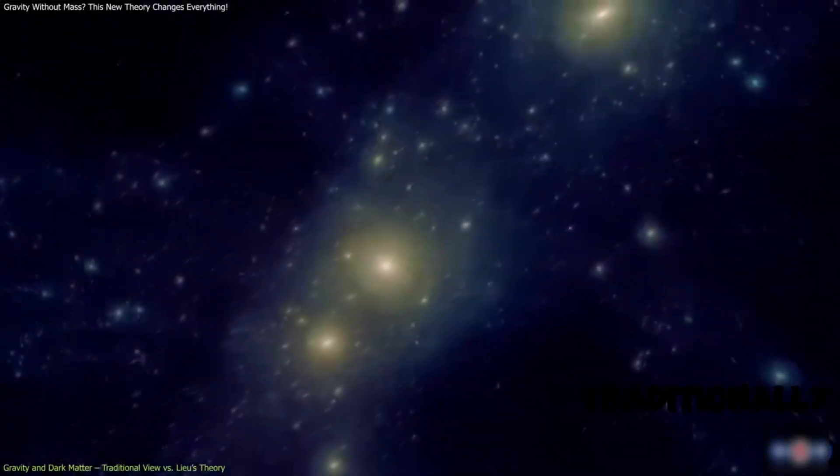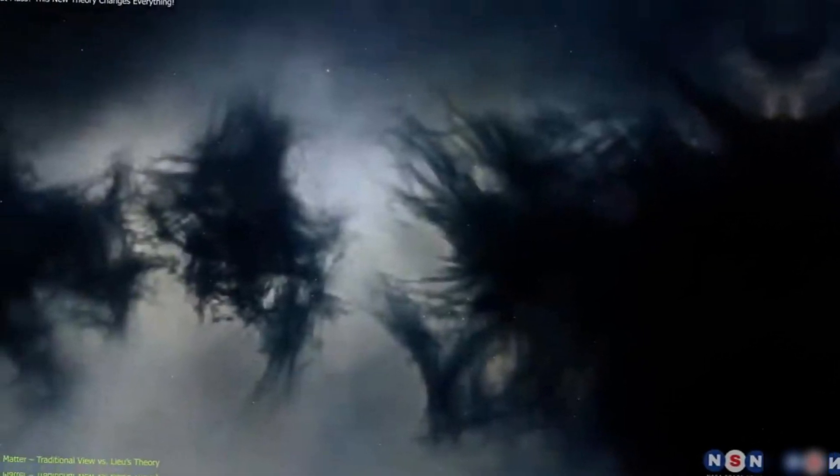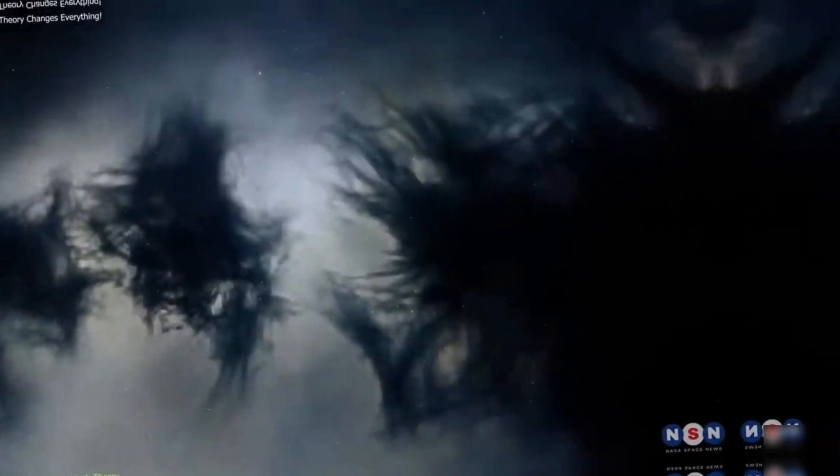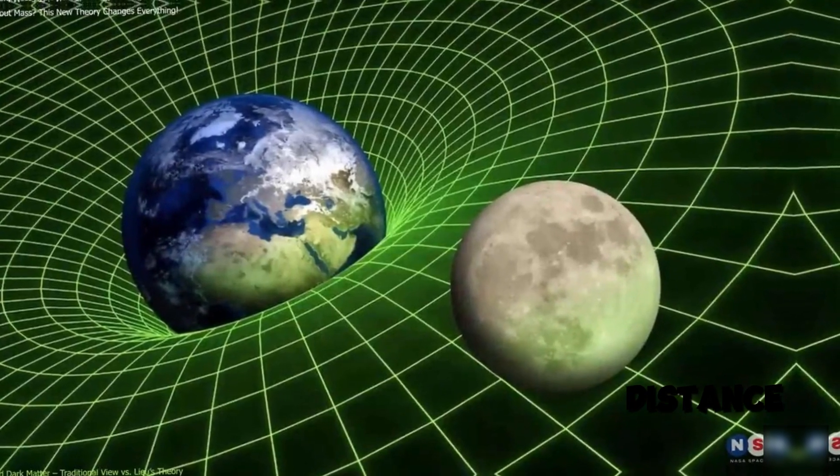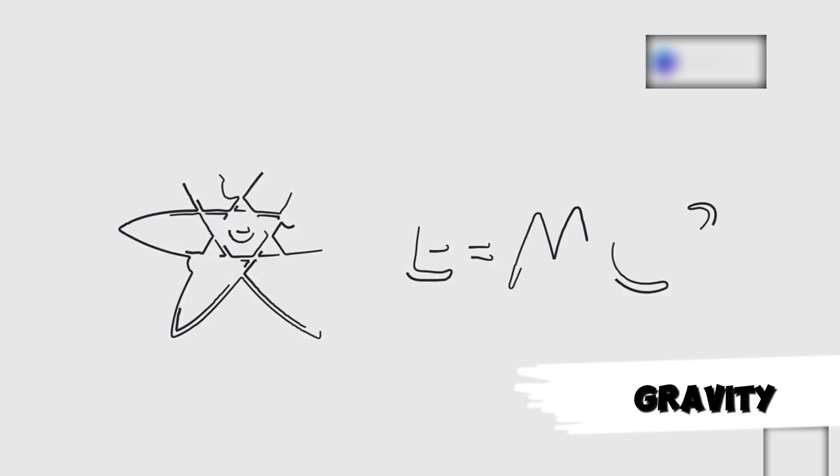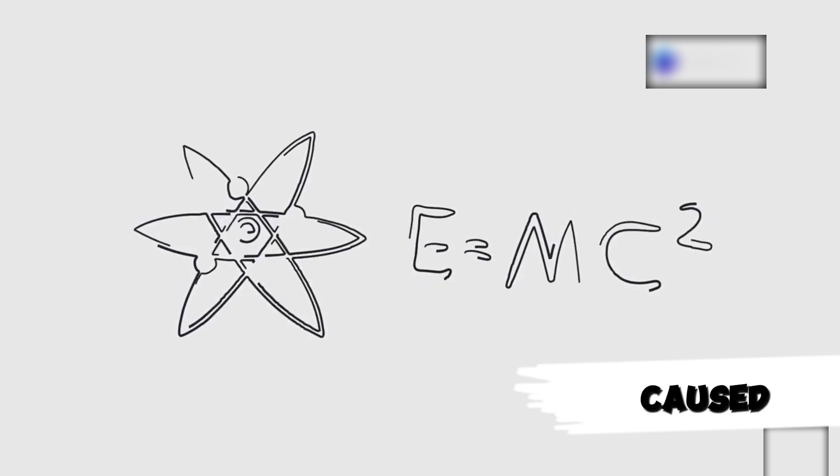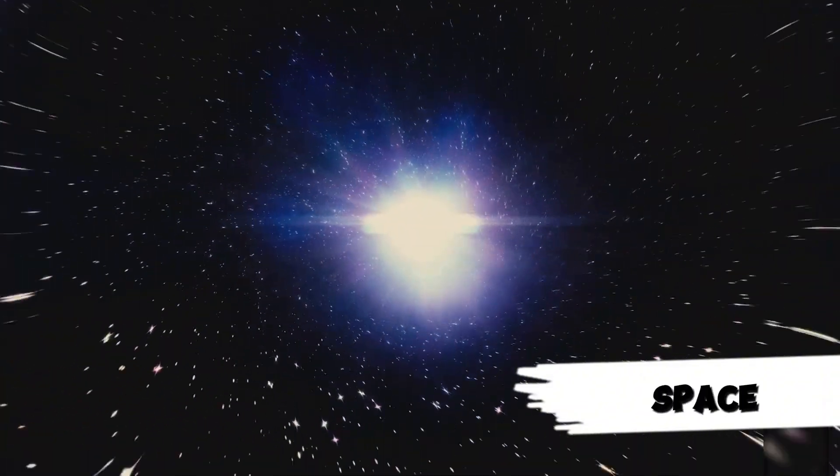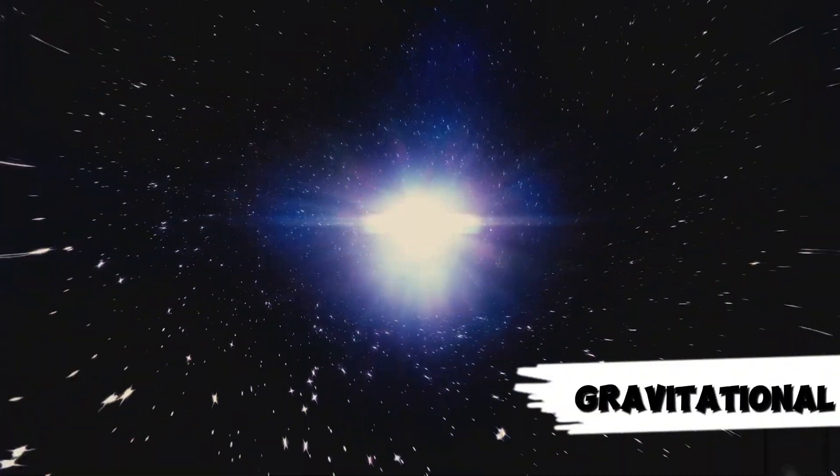Gravity, as traditionally understood, arises from mass. Newton described it as a force between two masses inversely proportional to the square of their distance. Einstein's general relativity refined this, presenting gravity as the curvature of space-time caused by mass and energy. Massive objects like stars bend space-time, creating the gravitational forces we observe.